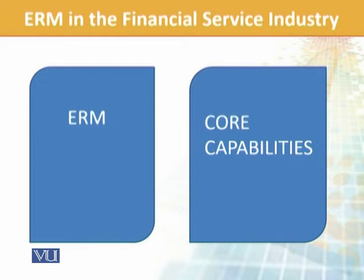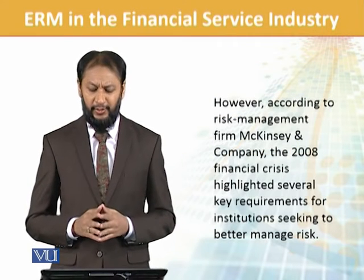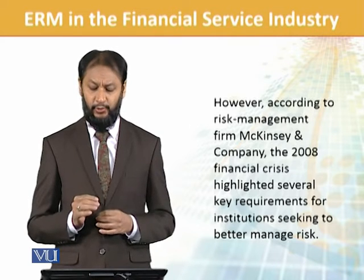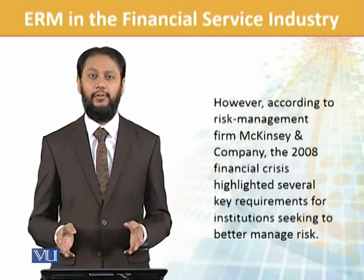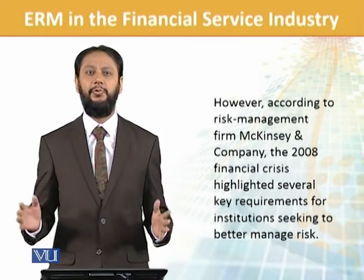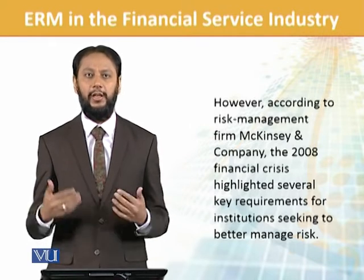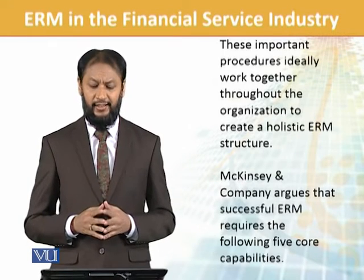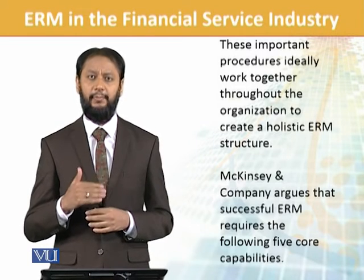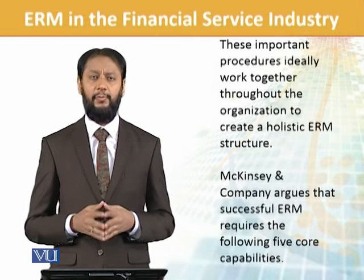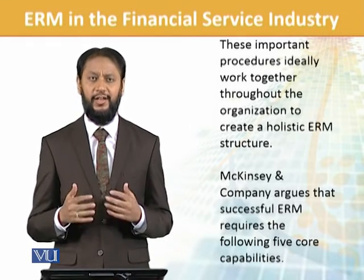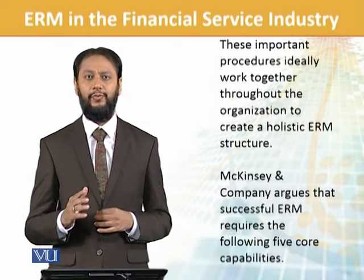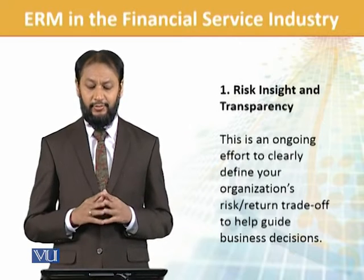In ERM we have some core capabilities. After the 2008 major financial crisis, these capabilities were derived. According to McKinsey and Company, the 2008 financial crisis highlighted several key requirements — institutions needed better risk management because it was a very major crisis; the entire stock market was shutting down for some time with worldwide financial issues affecting all financial institutions and financial instruments. These important procedures should ideally work throughout the organization to build an ERM structure. McKinsey identified five core competencies that need to be addressed for better ERM.